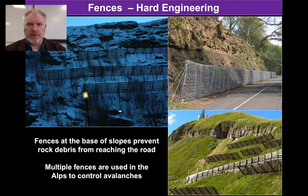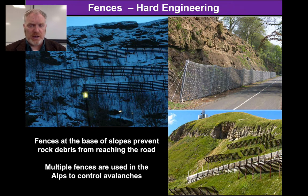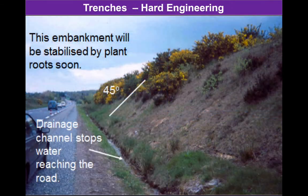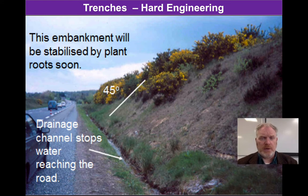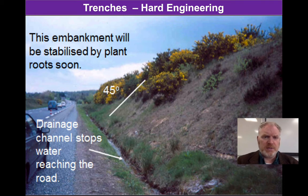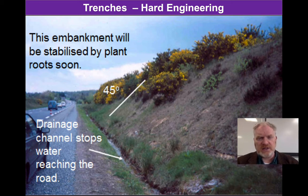If loose rock is a problem, particularly on very large slopes, one way of dealing with that is to build fences. You're not going to stop the rock from falling, but you will stop it reaching whatever you're trying to protect. Trenches are often used at the base of slopes — they can help drain water away and catch any falling rock material before it hits the road. Notice in this particular case, a number of different methods are actually used together: reprofiling the slope back to 45 degrees, vegetating the slope, and including a drainage channel. These techniques don't have to be used in isolation.